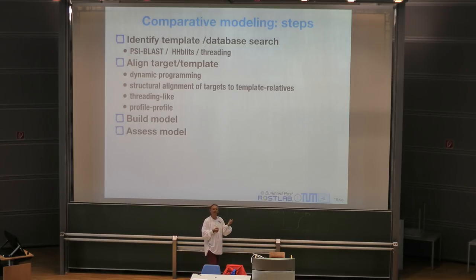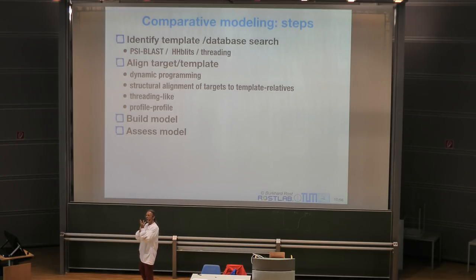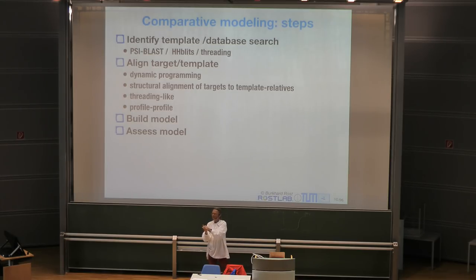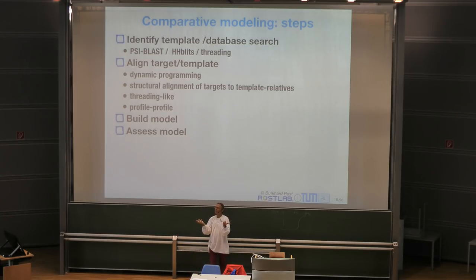This brings us back to what I mentioned before: alignments have insertions. It could be that in my query protein, what are five residues in the template are actually seven in Q — with two additional ones. Between two residues that happen to be negatively charged, there is something else in Q that doesn't exist in the template structure, so those charged residues can't be close in 3D.